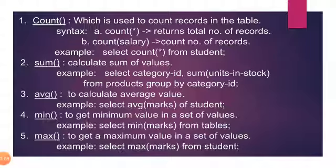Next is AVERAGE — it calculates the average value. For example, SELECT AVG(marks) FROM student calculates the average marks of the students. Similarly, MINIMUM: if you want to get the minimum value from a set of values, you write SELECT MIN(marks) FROM student — whoever got the minimum marks, that value is printed. MAXIMUM: to get the maximum value, SELECT MAX(marks) FROM student prints the maximum marks from the student table.